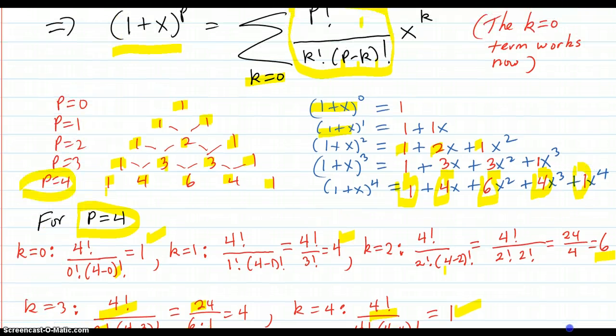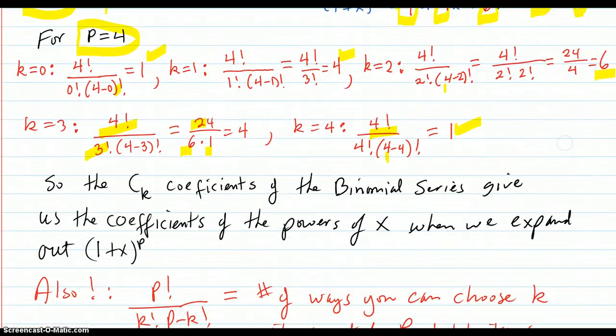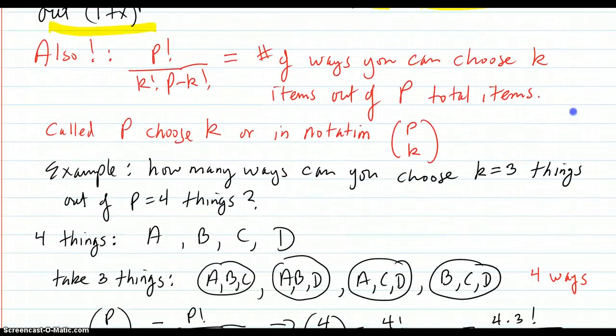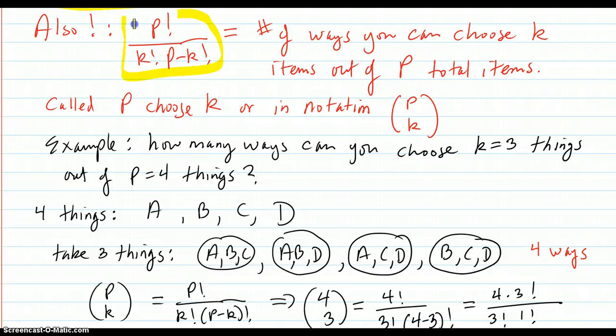So these do give you the binomial coefficients. So the ck coefficients of the binomial series give us the coefficients of the powers of x when we expand out 1 plus x to the p. Also, this expression right here, p factorial divided by k factorial, p minus k factorial, happens to be the number of ways you can choose k items out of p total items. Not totally a shock because you either take the item or you don't, it's a binomial situation. Two choices. This is also called p choose k, or in notation, p choose k.